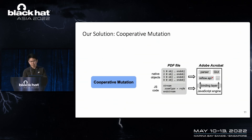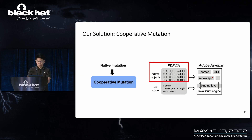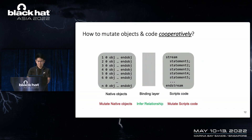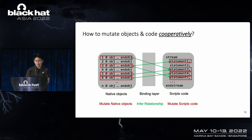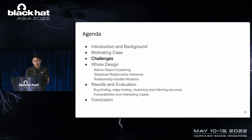Our solution is cooperative mutation. It is straightforward to understand: we mutate both native objects and script code in a cooperative manner. To achieve cooperative mutation, we first need to infer the relationship between native objects and script code, and then use the inferred relationship to guide mutation on both sides. Specifically, if a script API has a strong connection with certain objects in a document, we assign those objects a high priority for mutation; otherwise, we randomly choose objects for mutation.